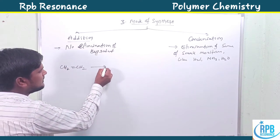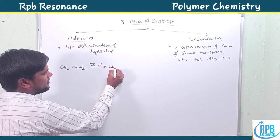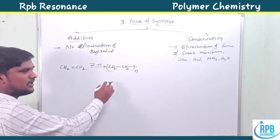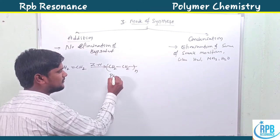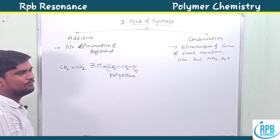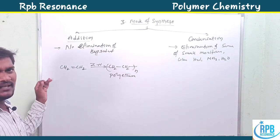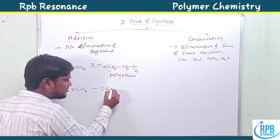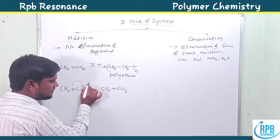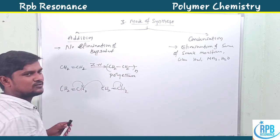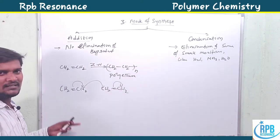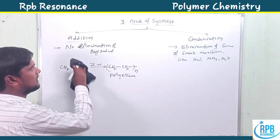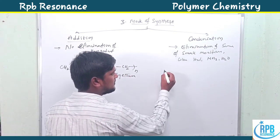For example, ethylene in the presence of a catalyst combines to form polythene — the polymer of ethylene. In this reaction, CH₂=CH₂ units join together converting unsaturated bonds to saturated ones with no elimination. These kinds of reactions are called addition polymerization.